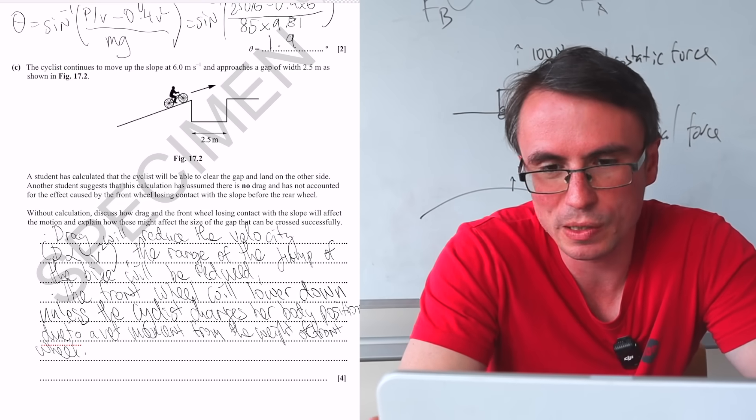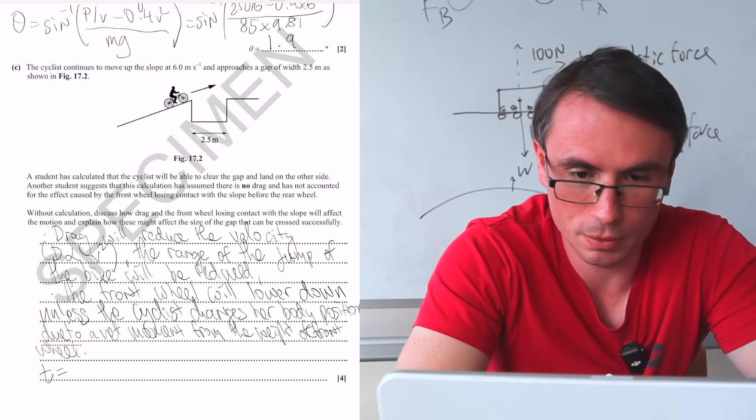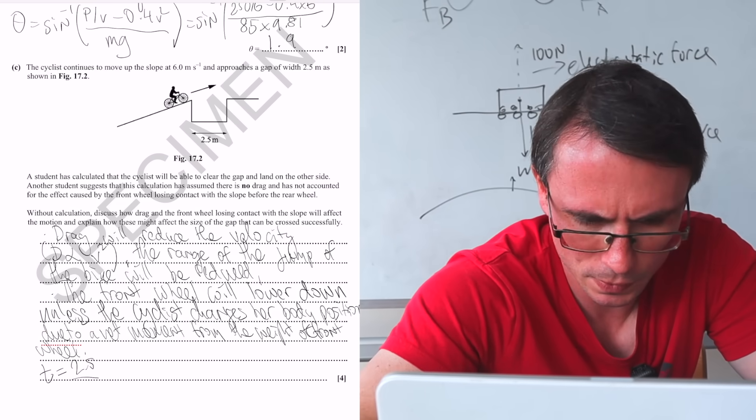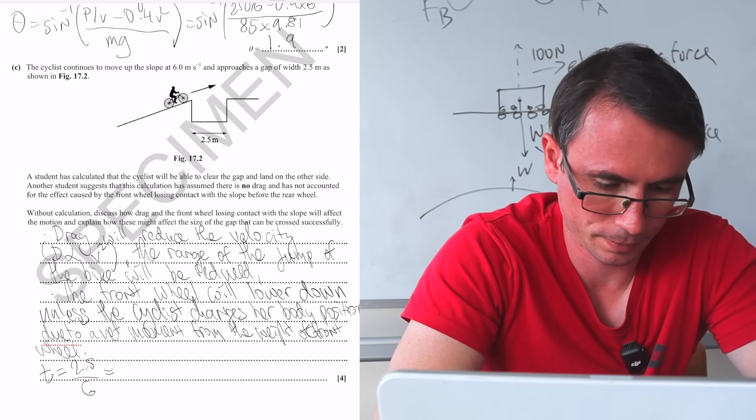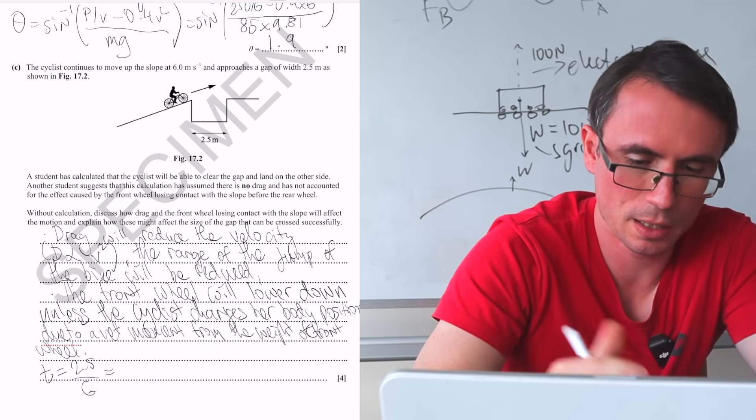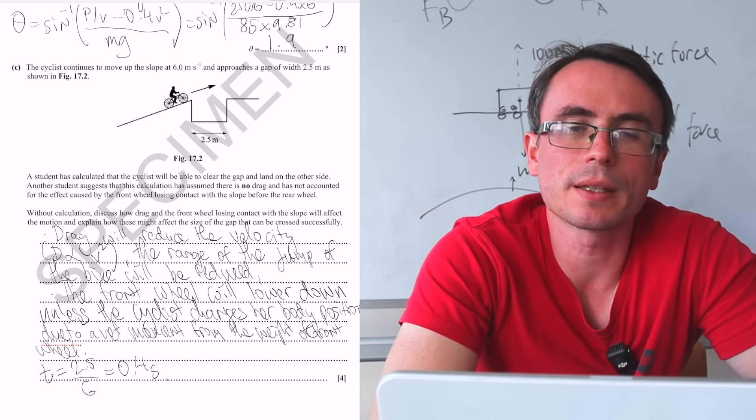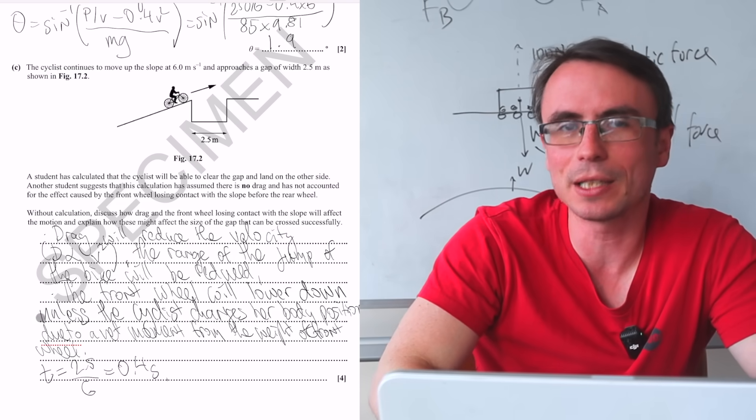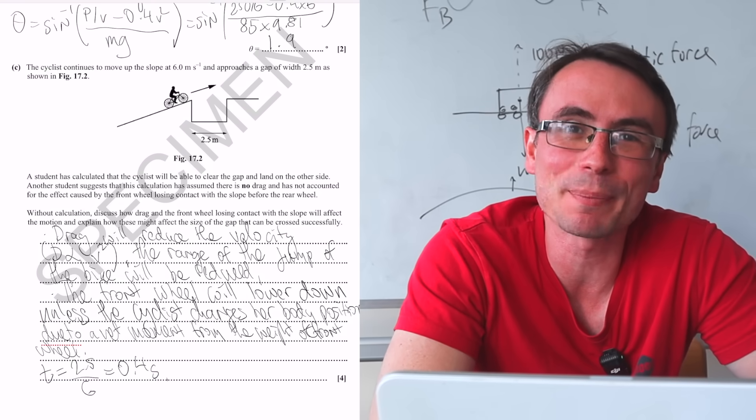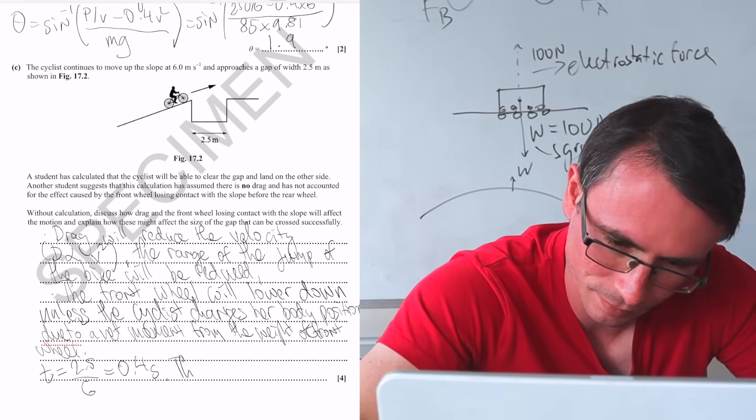The time at which the bicycle is going to cross the gap is going to be given by 2.5 over 6, which is going to be tiny. Technically 5.9, but this is just a little estimation, so that's around 0.4 seconds. So I think that all of those effects are likely to be insignificant. However, 2.5 meters is quite the gap, so I would prefer to have a much shorter gap to jump from.